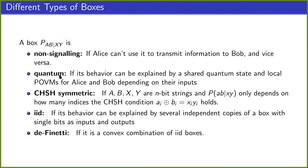The second kind of box are quantum boxes, which are just boxes that are compatible with quantum theory in the sense that they can be described by having some shared state between the black boxes of Alice and Bob, and for each input of Alice and for each input of Bob a POVM such that the outputs are generated by just measuring this shared state using the POVM corresponding to the inputs of Alice and Bob.